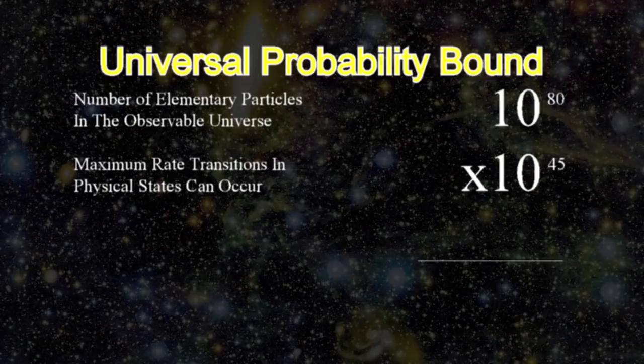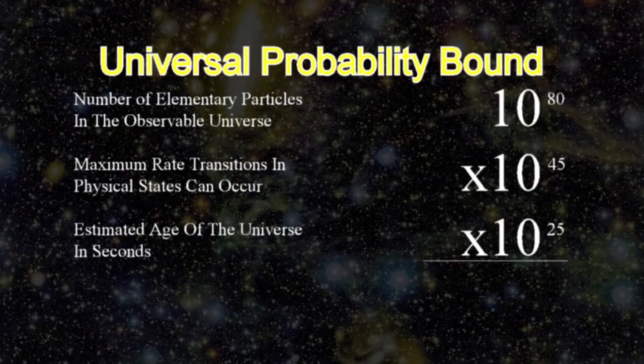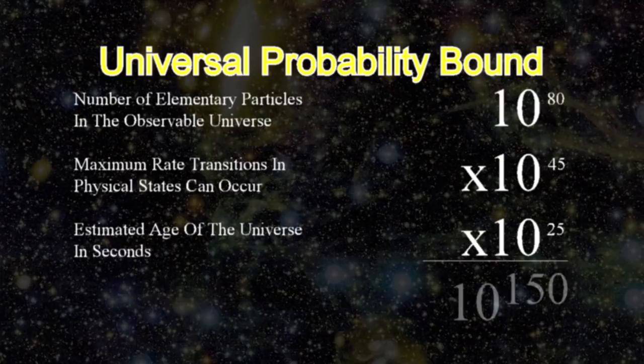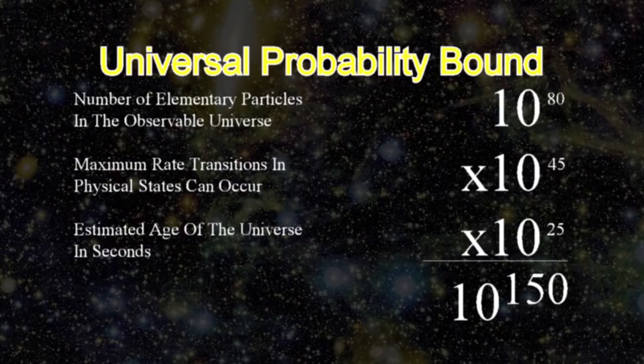Times 10^25 — a billion times longer than the typical estimated age of the universe in seconds — arriving at 10^150 as the upper limit on the number of physical events that could possibly have occurred in the observable part of the universe according to physicists since the Big Bang.